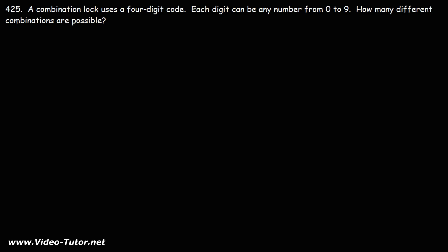Number 425. A combination lock uses a four-digit code. Each digit can be any number from 0 to 9. How many different combinations are possible?